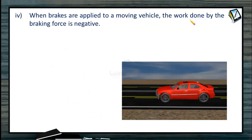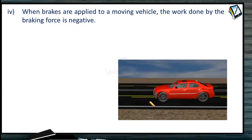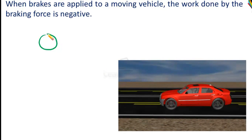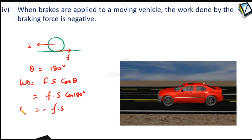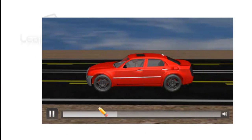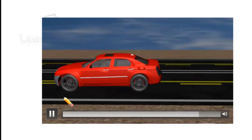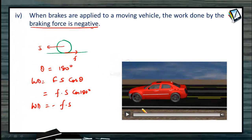When brakes are applied on a moving vehicle, work done by the brake friction force is negative. As the car moves forward and brakes are applied, friction force acts in the opposite direction. Displacement is forward, friction force is backward, so theta is 180 degrees. Work done = F·s·cos 180° — negative work is done. The car comes to a stop; work done by the friction (braking) force is negative.